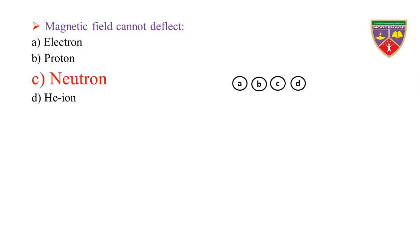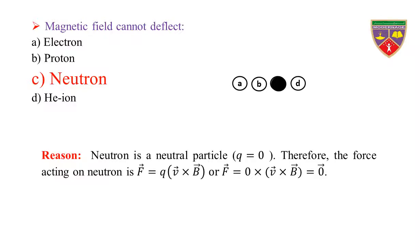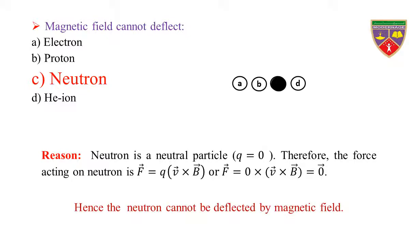Therefore, the correct option is C. Reason: Neutron is a neutral particle. Q is equal to zero. Therefore, the force acting on neutron is F = Q × V cross B, or F = 0 × V cross B, which is equal to zero. Hence, the neutron cannot be deflected by a magnetic field.